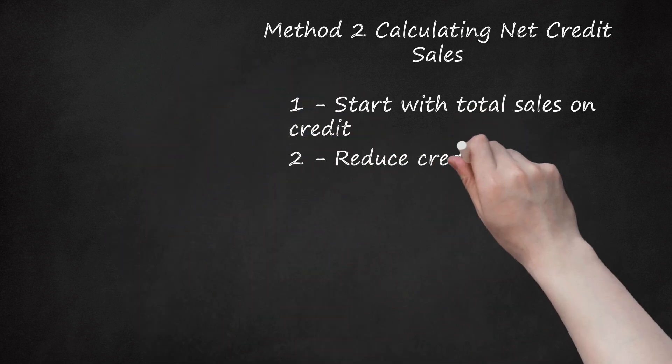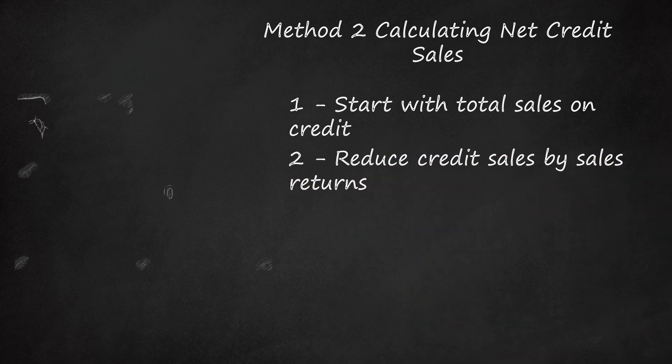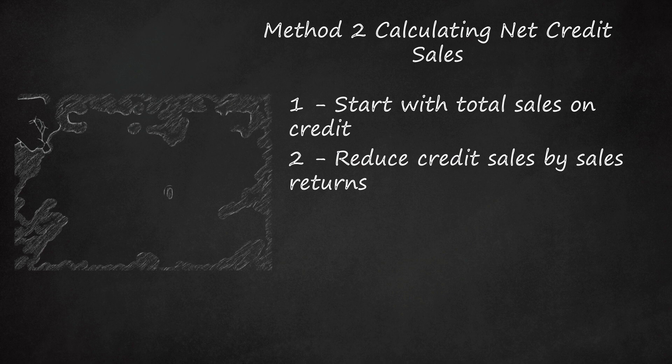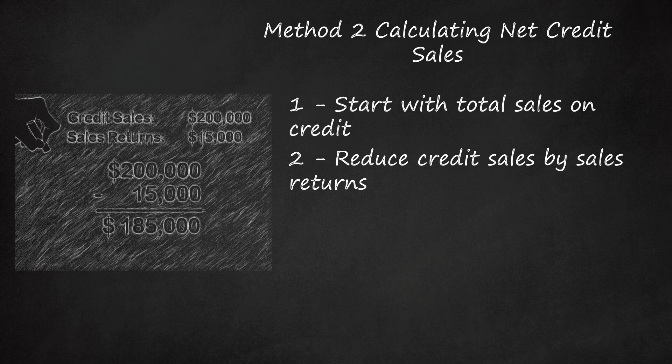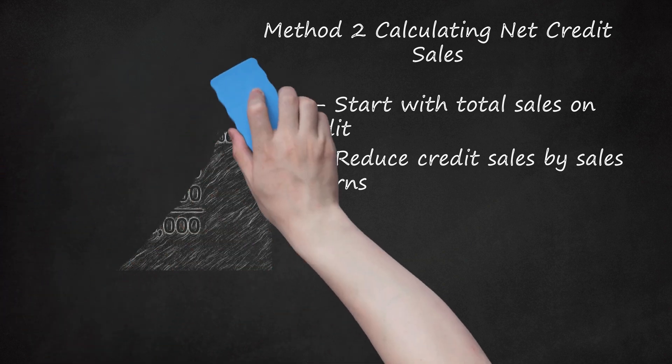Reduce credit sales by sales returns. Most businesses will experience a loss in credit sales as customers return defective or unwanted items. Returns then are recognized as a reduction to net credit sales. Sum up all returns made on credit sales over the course of the period. Then subtract the total value of these returns from credit sales. If the company from the previous example had $15,000 in returned items over the same year, they would reduce their $200,000 in credit sales by the $15,000 to get $185,000. This information can be found in the General Ledger Account Sales Returns and Allowances.